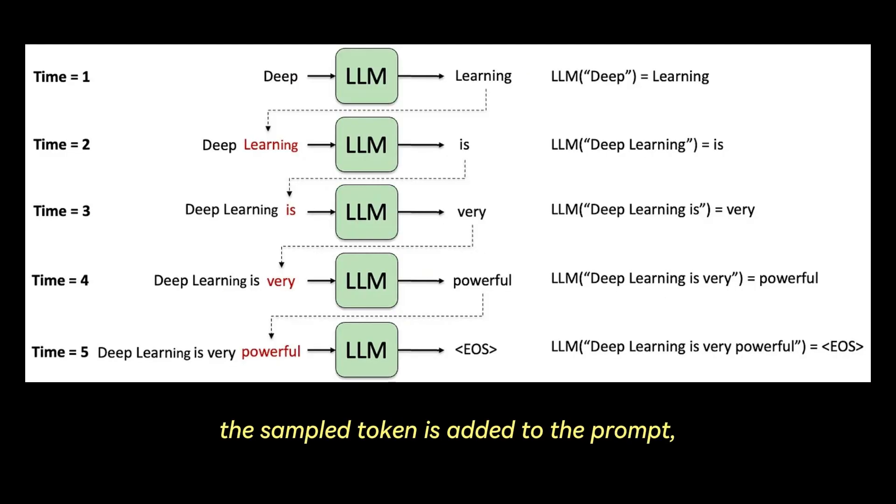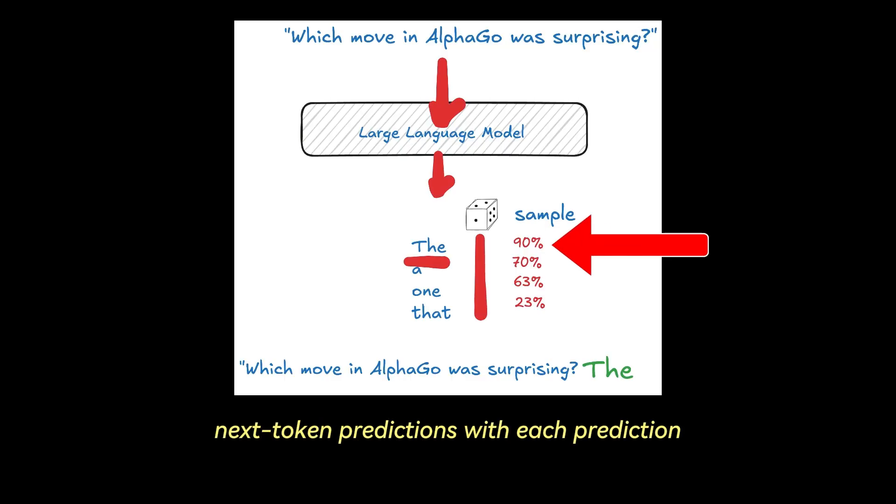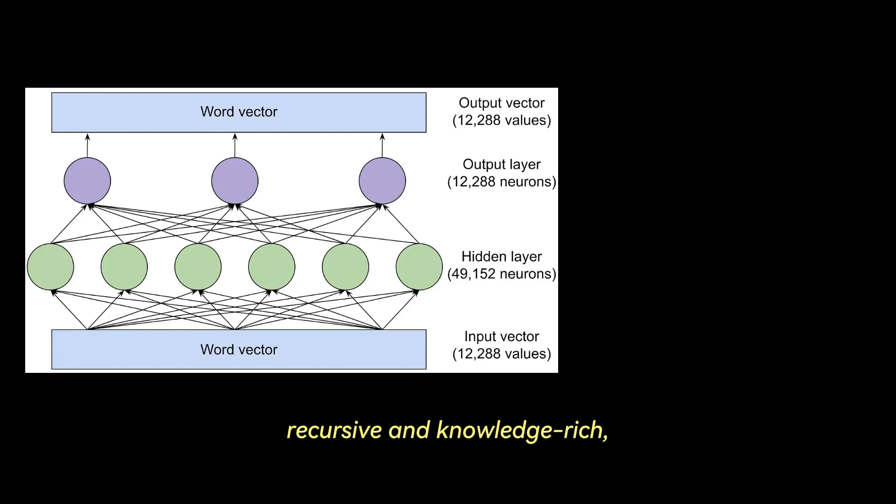After sampling, the sampled token is added to the prompt and the process repeats. The main insight is that the entire output is a rolling chain of probabilistic next-token predictions, with each prediction conditioned on everything generated so far. While this might sound simple, it gives rise to sophisticated behavior because language itself is structured, recursive, and knowledge-rich. And the model has deeply internalized these structures.